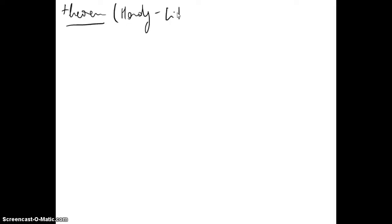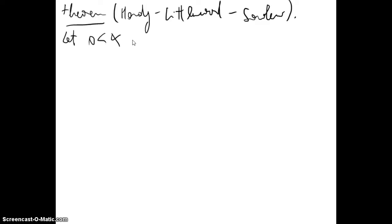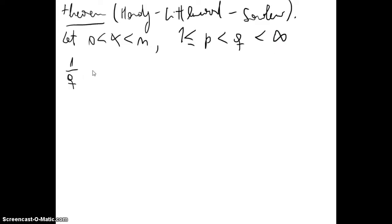This is the Hardy-Littlewood-Sobolev inequality, sometimes called the Hardy-Littlewood-Sobolev lemma. Let alpha be between 0 and n, with 1 less than or equal to p, then q less than infinity, with 1 over q equal to 1 over p minus alpha over n.